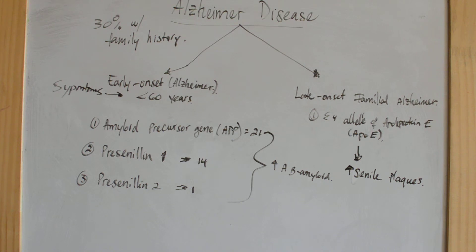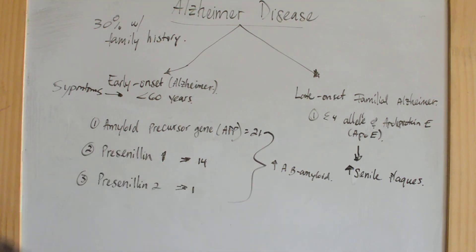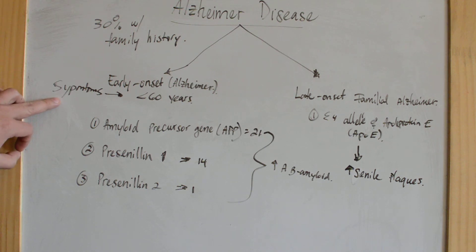Both amyloid precursor genes and presenilin gene mutations are thought to promote the production of beta amyloids. Increasing the production of beta amyloids leads to early onset Alzheimer's.